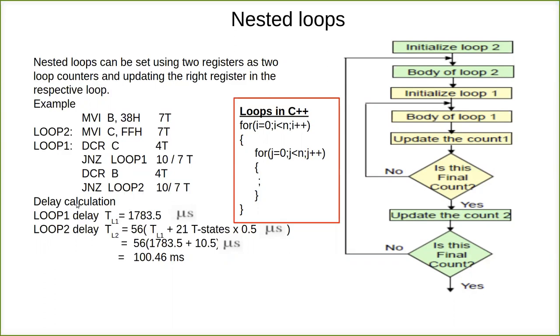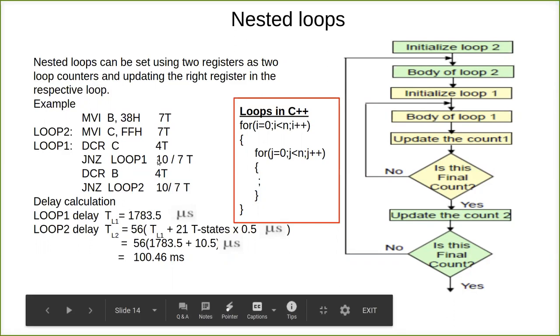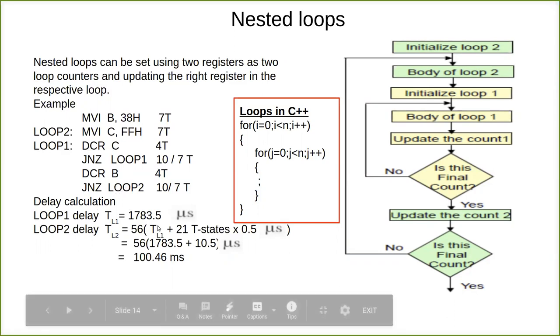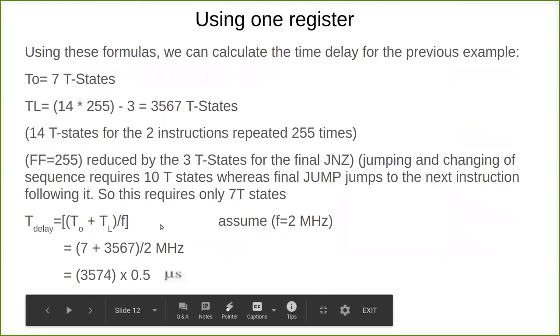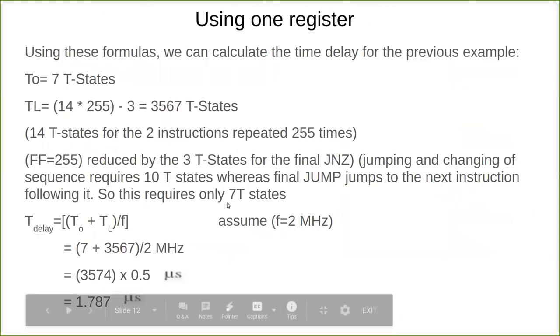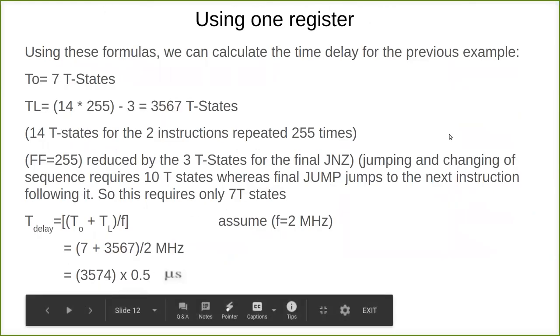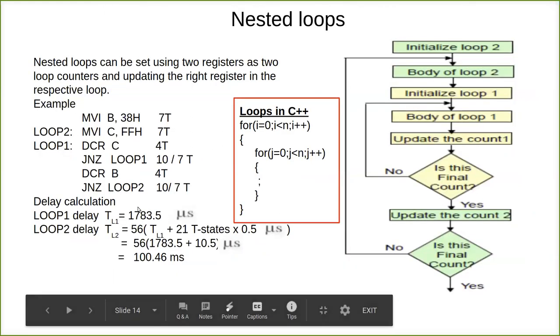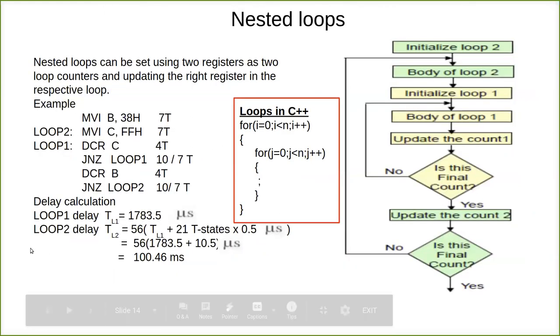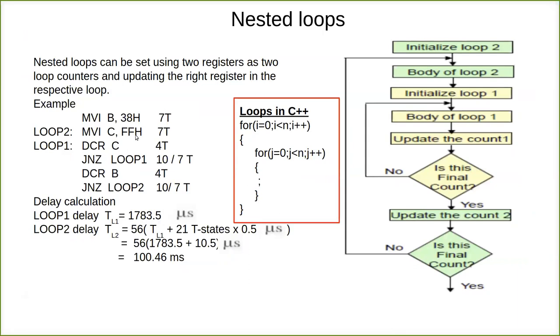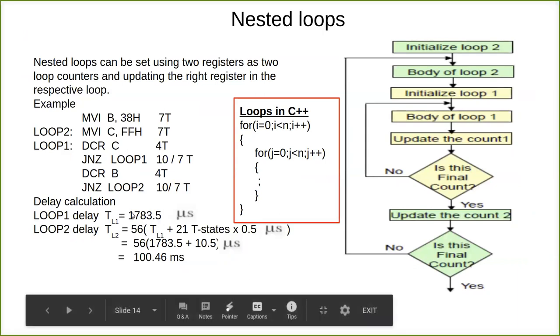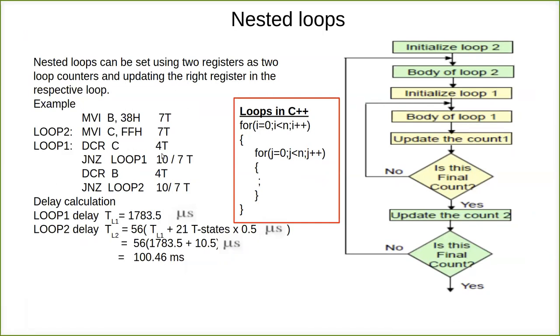Now when you calculate the delay for this loop, first you have to do it for loop 1. This we have already seen in the previous video. For single register, we have 1.787 microseconds. We will take that as is, because we have used the same value. If you use some other value, then again you have to calculate. For convenience, we have taken the same value for C register.